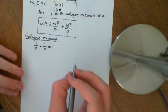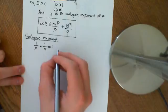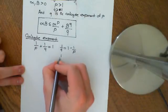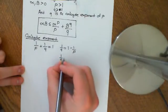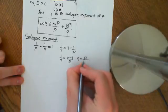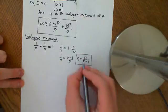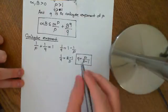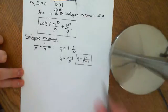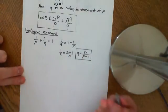So that's what it means for p and q to be conjugate exponents. If we want a direct formula for q in terms of p, we can say that 1 over q equals 1 minus 1 over p, which is p minus 1 over p. Flipping both sides gives q equals p over p minus 1. For example, if p equals 2, then q equals 2 over 2 minus 1, which is 2. So 2 is the conjugate exponent of 2.